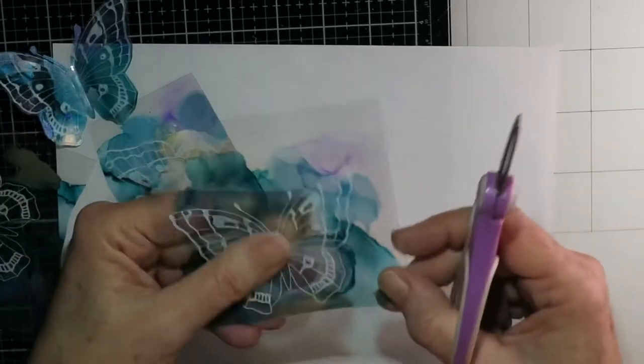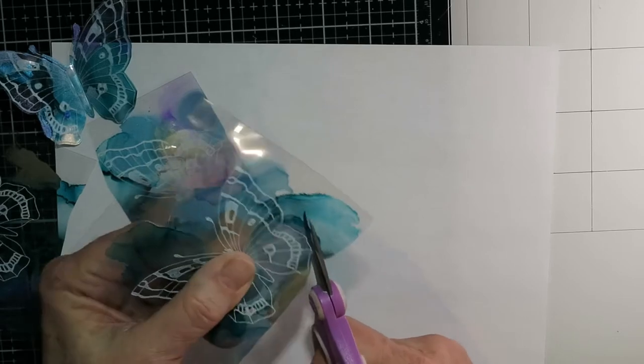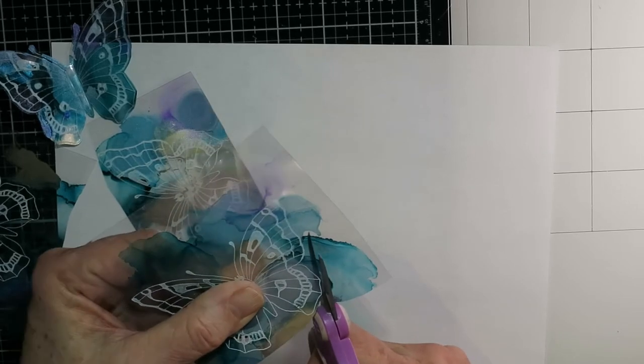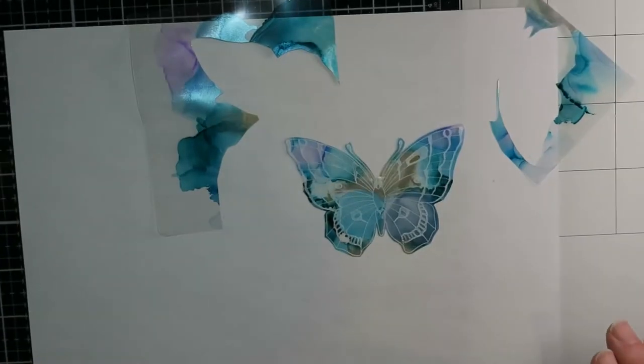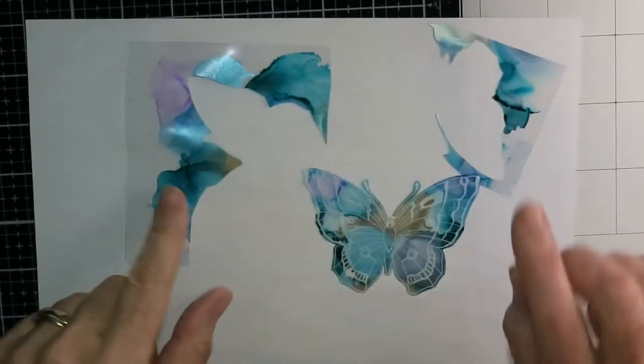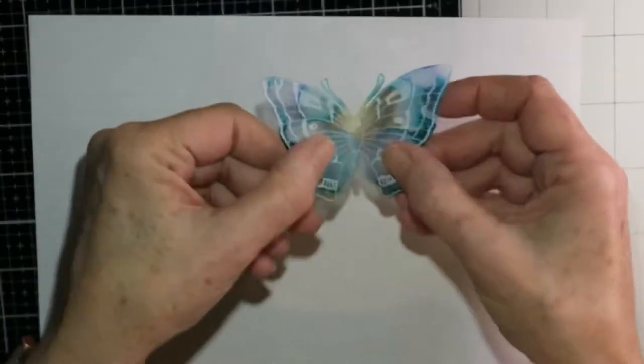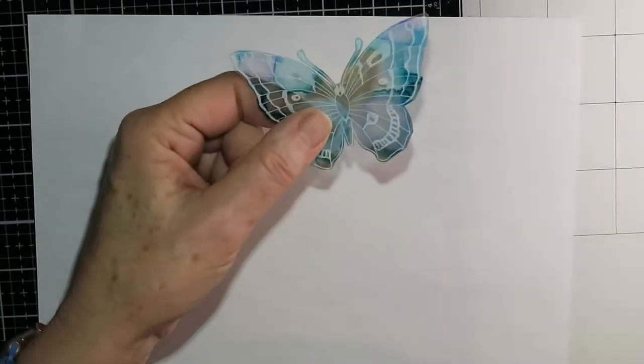So I'm just showing you here, I just fussy cut these butterflies out. These butterflies are from a British stamp maker, Chocolate Baroque. It was a tangled garden, I believe. But whatever you had, I would say use it. And those little pieces, I saved those. And I'll show you why in a little bit.